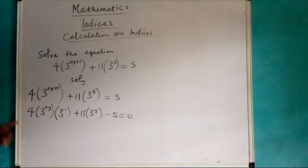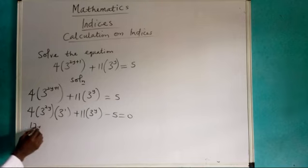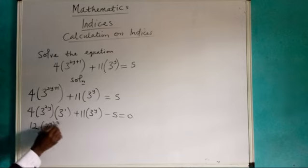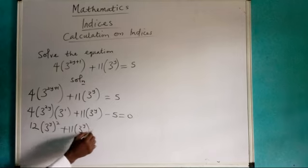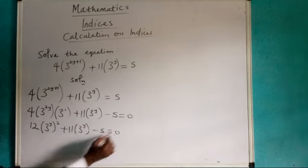Now we can still go further. 3 power 1 is 3 and 4 becomes 12. And here I can work it as 3 power y squared plus 11 and I still have 3 power y in brackets minus 5 equals 0.